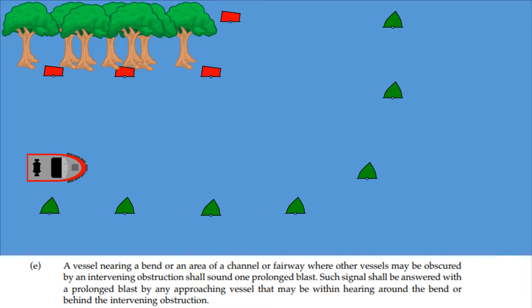A vessel nearing a bend or an area of a channel or fairway where other vessels may be obscured by the intervening obstruction shall sound one prolonged blast. Such signal shall be answered with a prolonged blast by any approaching vessel that may be within hearing, around the bend or behind the intervening obstruction.